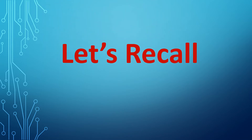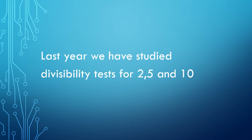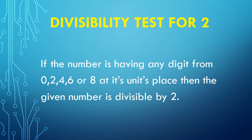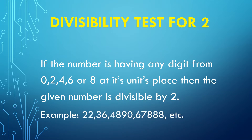Let's recall — last year we studied the divisibility test for 2, 5, and 10. Divisibility test for 2: if the number has any digit from 0, 2, 4, 6, or 8 at its unit's place, then the given number is divisible by 2. For example, 22 has 2 at its unit's place, so it is divisible by 2. 36 has 6 at its unit's place, so it is divisible by 2. 67,888 has 8 at the unit's place, so the entire number is divisible by 2.